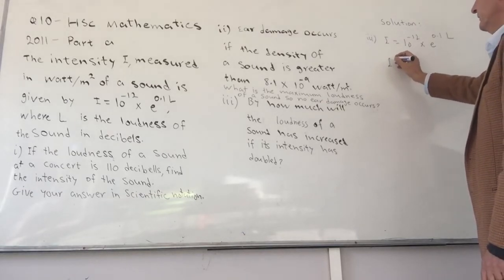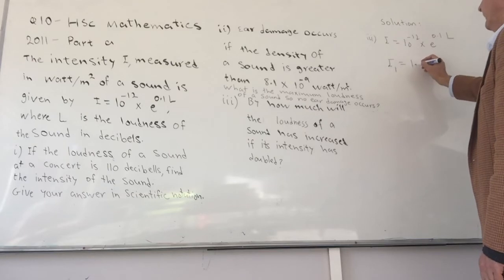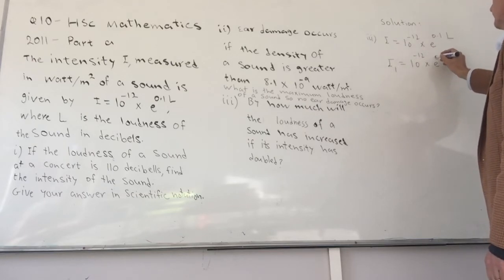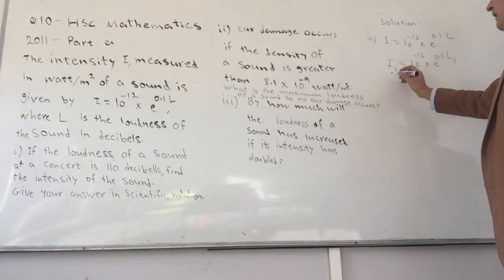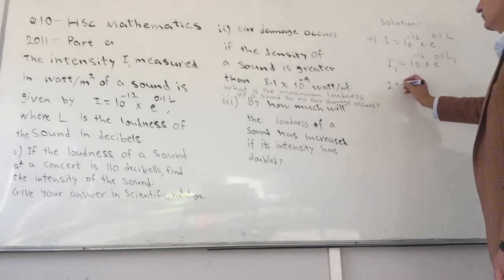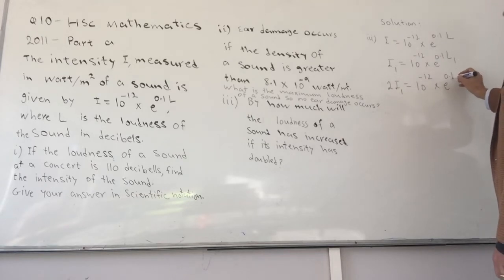What I can do is say my initial intensity is I1, and I have 10 to the minus 12 times e to the 0.1L1. The intensity I1 corresponds to the loudness L1. Now I want my intensity to double, so 2 times I1 equals 10 to the minus 12 times e to the 0.1L2. Obviously I have a different loudness, so let's call it L2. Remember, we are going to find the difference between L2 and L1, knowing that the intensity here is double of the previous one.